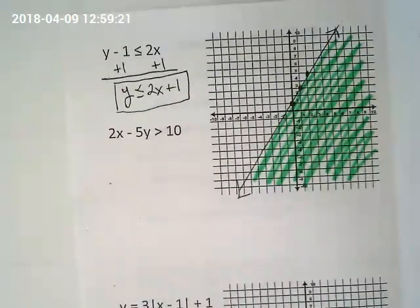I could pick any of these points in here and take that xy and throw it in and it would be a true statement. And we'll test that in a minute. Because it's a solid line, I could also pick any xy pair on the line, because it's less than or equal to.